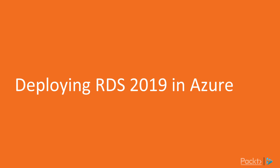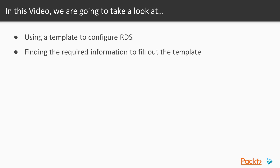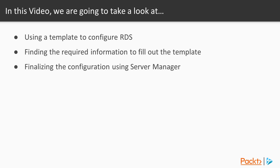We'll be working with Larry to see how to deploy RDS to 2019 in Azure. We're going to learn how to use a template to deploy RDS. Using that template, we'll see where to find the information we need to fill out the template. Once deployed, we'll see how to configure RDS from within Server Manager.